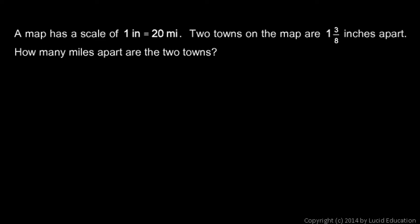Well, 1 and 3 eighths inches, and each of those inches corresponds to 20 miles. So in this case, I need to multiply 1 and 3 eighths times 20. Let's rewrite this so both of these numbers are fractions. I'll convert the 1 and 3 eighths to an improper fraction. 8 times 1 is 8, plus 3 is 11. So that's 11 eighths. And then the 20 can just be written as 20 over 1. So 1 and 3 eighths times 20 can be rewritten as 11 over 8 times 20 over 1.